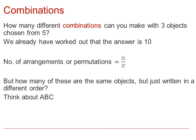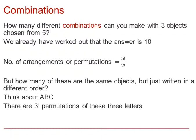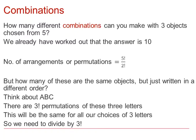If we think about ABC, there are three factorial permutations of these letters. So this will be the same for all our choices of three letters. Therefore, we need to divide by three factorial to find the number of different combinations.